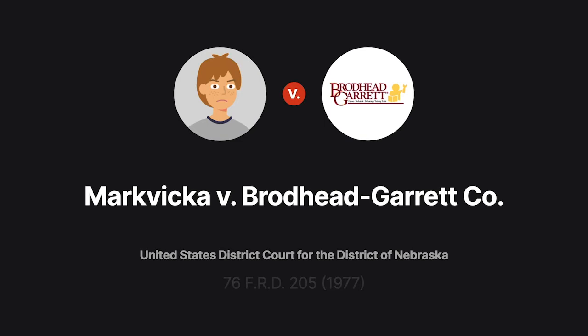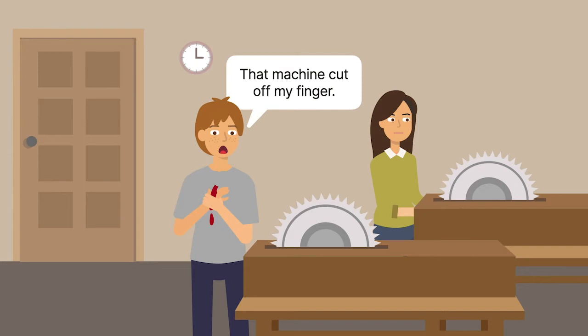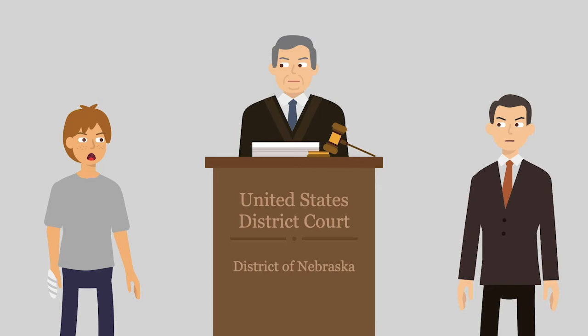Mark Vicka was a minor student in the Ralston, Nebraska School District. He was severely injured while using a jointer machine in his woodworking class. An action was brought on Mark Vicka's behalf against Broadhead Garrett, the manufacturer of the jointer machine, in federal district court. Mark Vicka alleged that the jointer machine was defectively designed.